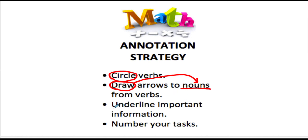Then I'm going to underline important information — that may be nouns, or important words like 'increase' or 'decrease,' words that help me understand what is actually happening within the problem. And one thing that is crucially important when you get to word problems involving many different tasks is to number your tasks. For example, if you're asked to find the area of a triangle, that would be number one. If you had another task, you'd label that number two. These help you understand what you need to be able to do.